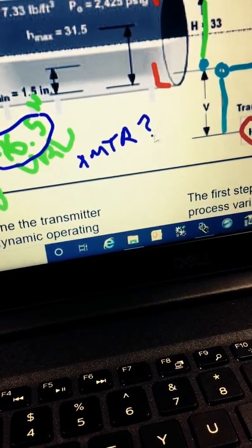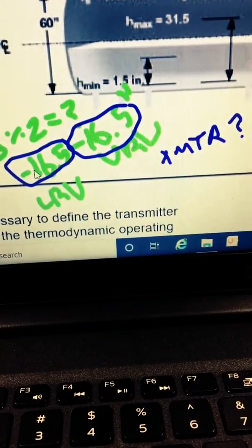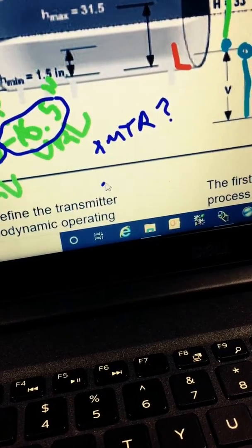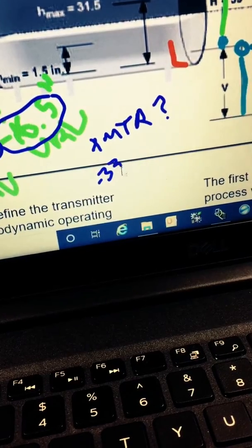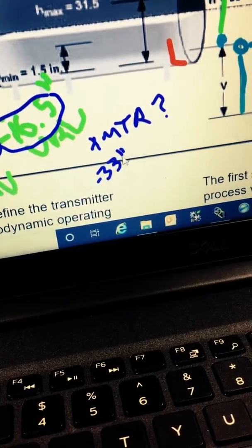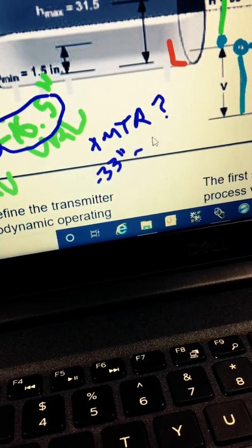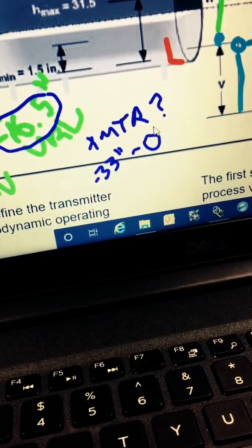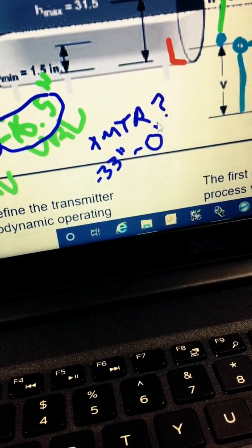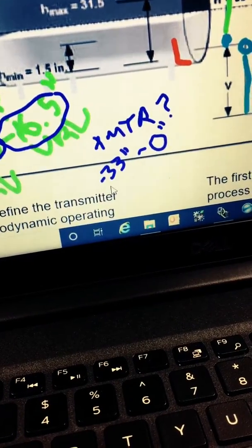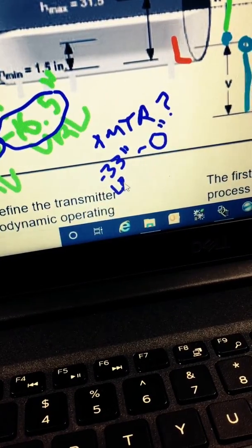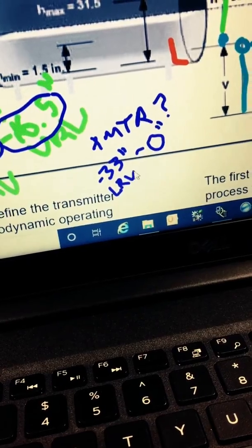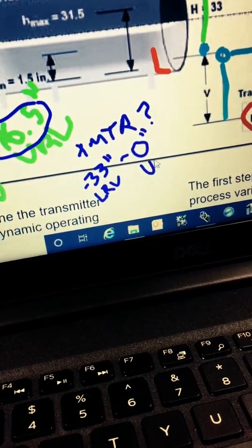So, what is our transmitter range going to be? If you listen to the other podcast, you probably guessed it. It's going to be 33 inches, because it's going to have a difference of 33 inches. So, what you're going to see here is because it's tapped low of the drum to the high side of the transmitter and high of the drum to the low side of the transmitter, you're going to have a minus 33 inch lower range value and you're going to have a zero inch upper range value.